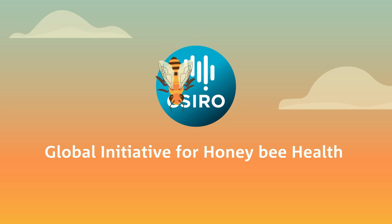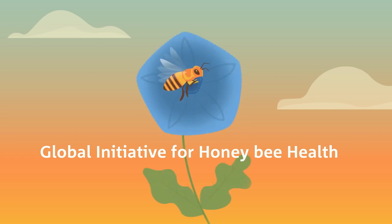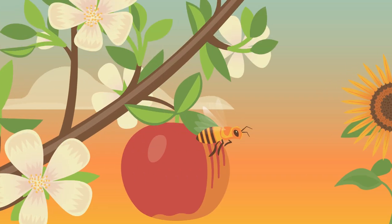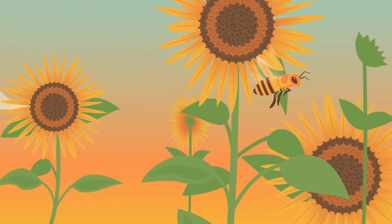Bees play an important role in ecosystems and agriculture the world over. One-third of the food we eat relies on pollination by bees including fruit, vegetables, oils, seeds and nuts.